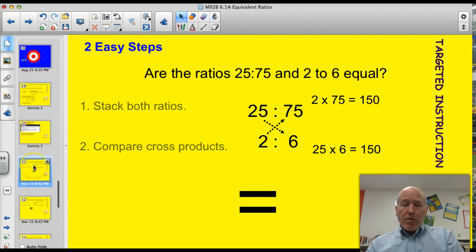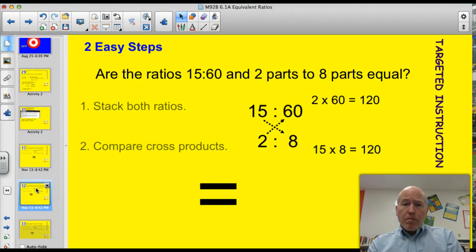Let's try another problem together. Then I'm going to cut you loose and make you work a little bit tonight. Are the ratios 15 to 60 and 2 parts to 8 parts equal? Follow the steps. Step 1, stack the ratios. So I've got 15 to 60, I've got 2 to 8. It really doesn't matter which one you put first. Just make sure they're stacked up. So next, compare the cross products.